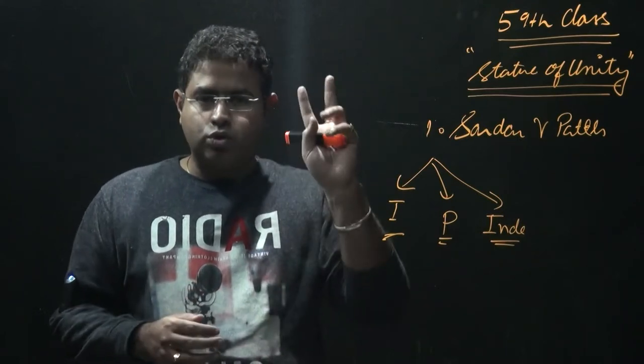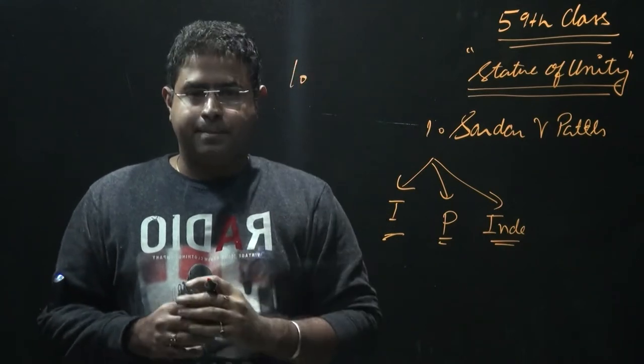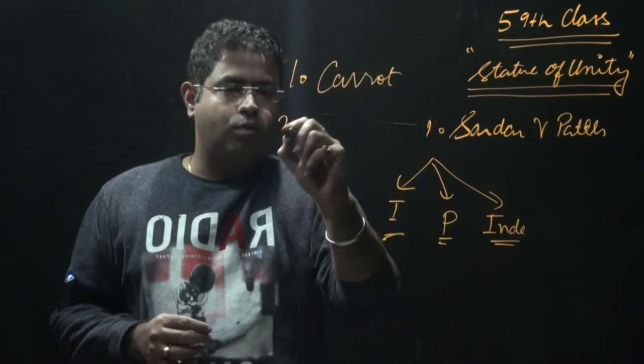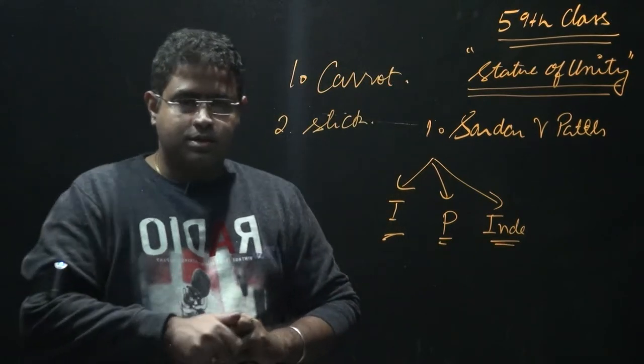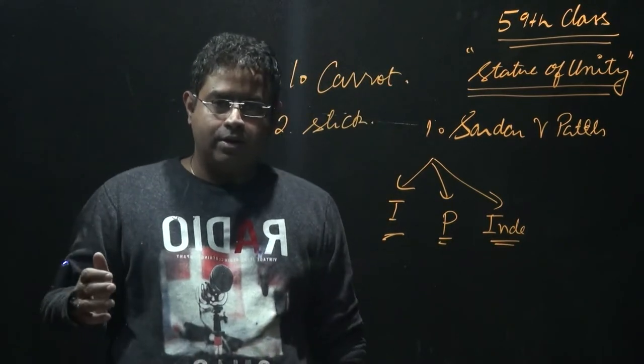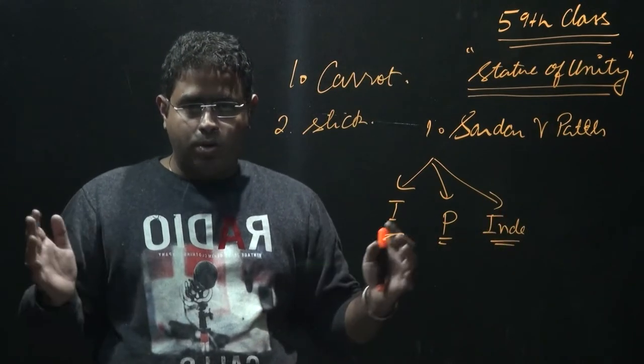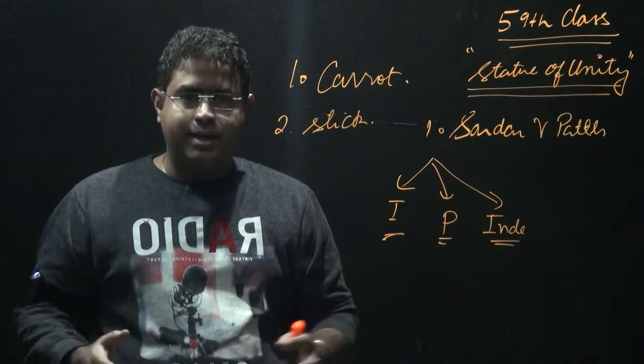He used a two-pronged approach. First of all, he offered them carrot. And the second thing was the stick. So using carrot and stick policy, Sardar Vallabhbhai Patel was able to get back all these princely states and make them join India.